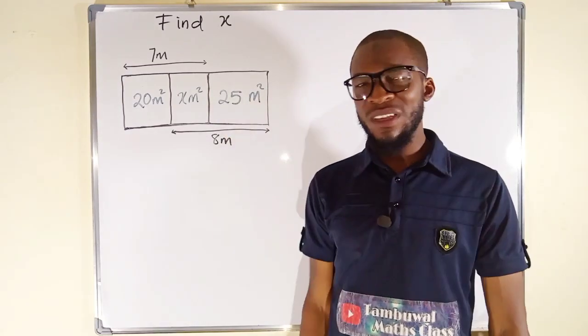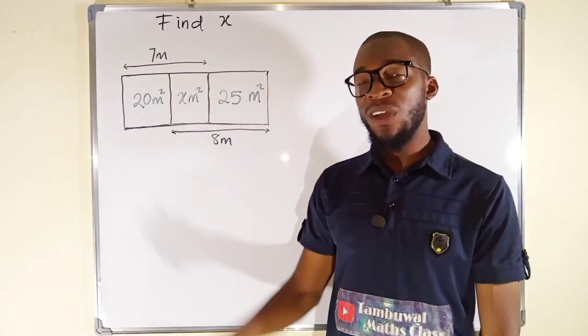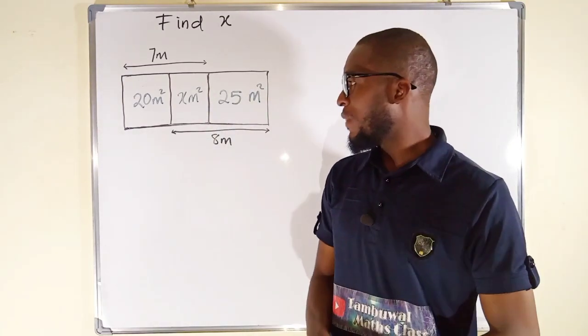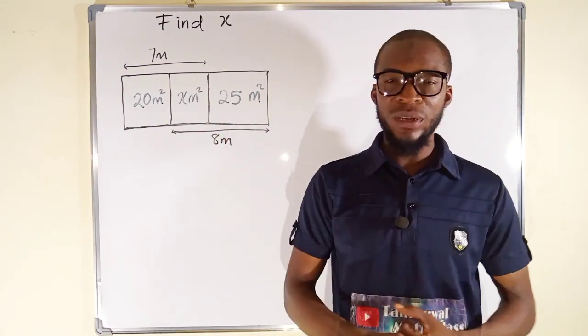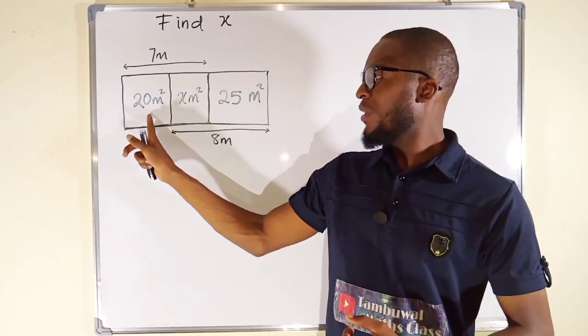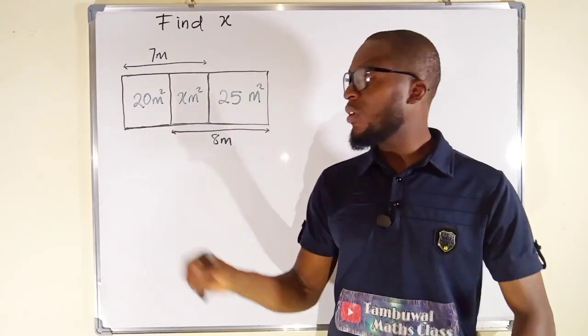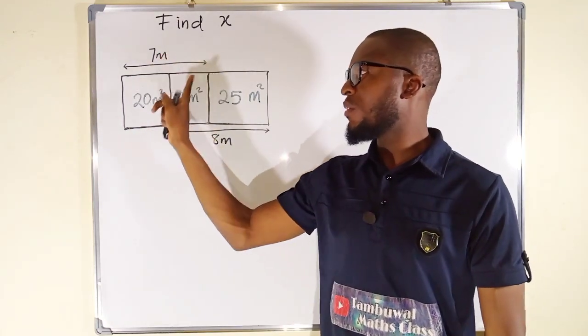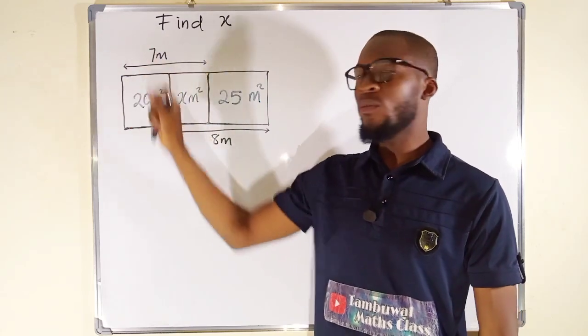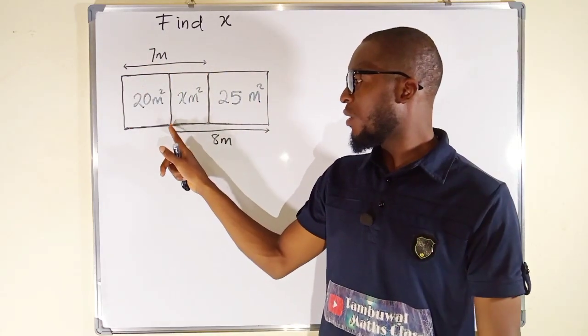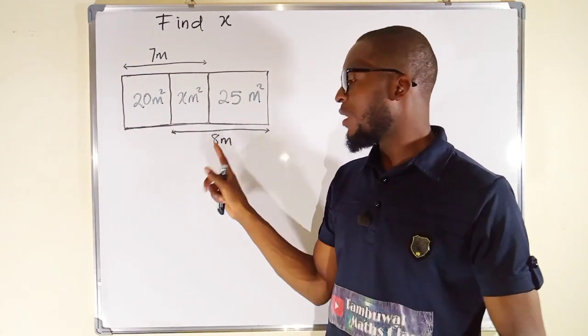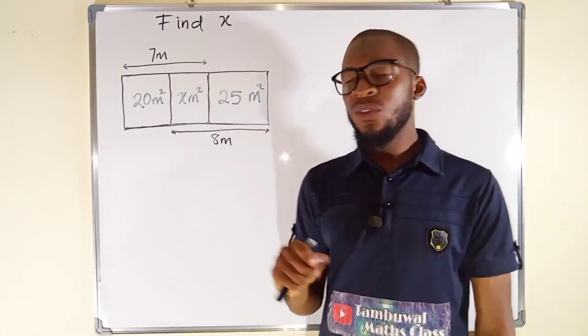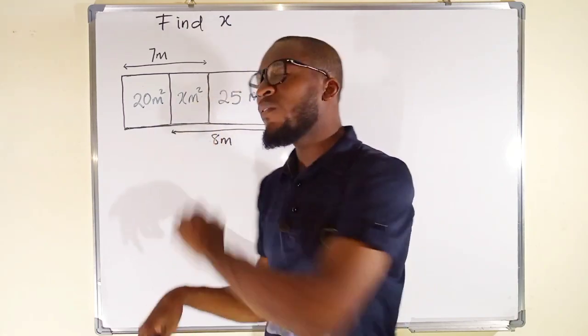The last rectangle is a square. You can see this number 25 is a perfect square number. This means that this is a square that has an area of 25 meters squared. The first and the second rectangle joined together has a length of 7 meters. You can see from this point to this point is 7 meters. While the second and the last rectangle joined together has a length of 8 meters.